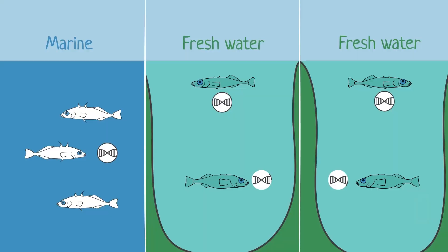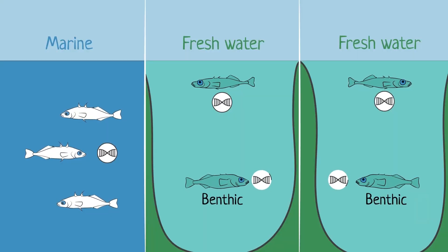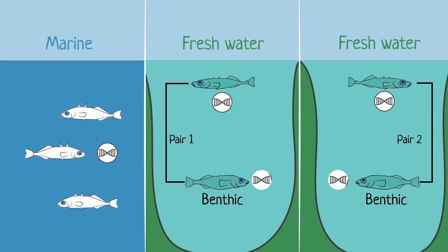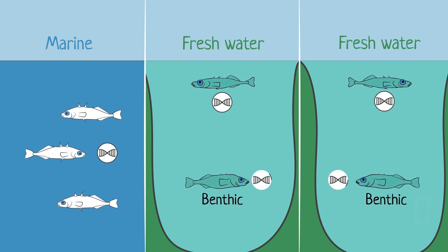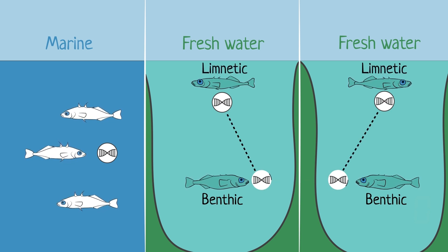When we looked at the genes we discovered two things that we did not expect. The gene variants that benthics have on different islands where these pairs evolved independently — we discovered that the gene variants in the benthics from two lakes were more closely related to each other than either is to the variant present in the limnetic species or in the marine species.